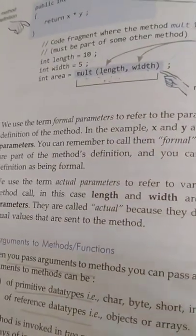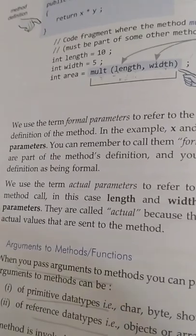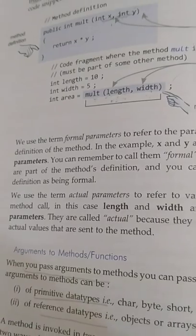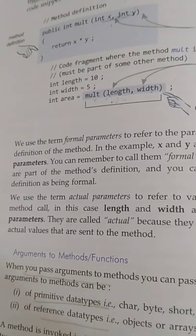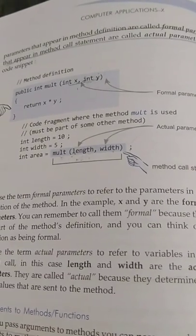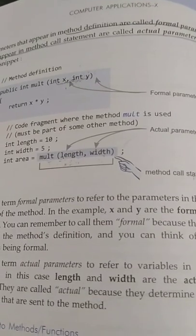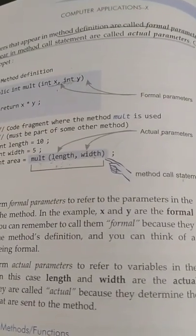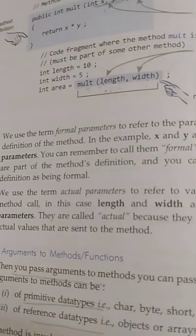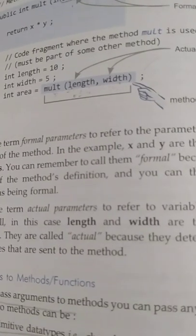Hello everyone, today we are going to discuss the differences between call by value and call by reference. In the last classes we discussed about parameters — two types: actual parameters and formal parameters. The parameters that appear in the method call statement are known as actual parameters, and the parameters that appear in the method definition are called formal parameters. Today we are going to discuss the types of arguments we can pass through our method.